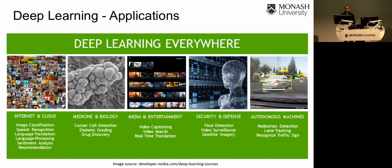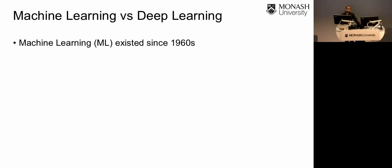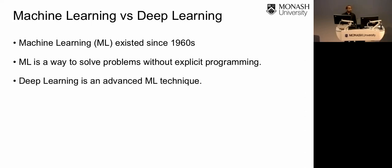Although these applications are not new, people have attempted to solve them using conventional techniques called machine learning, which has existed since the 1960s. Machine learning is a way to solve these problems without explicitly programming instructions. Deep learning can be considered an advanced machine learning technique, and we will look at the differentiation between machine learning and deep learning in later slides.